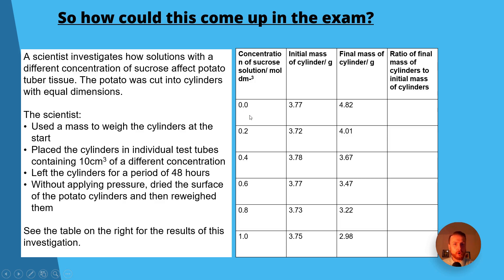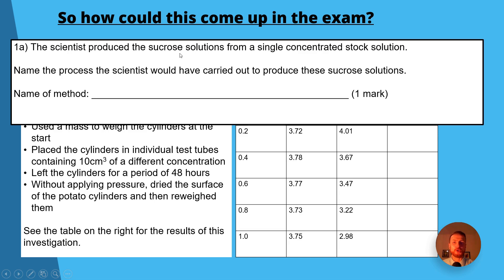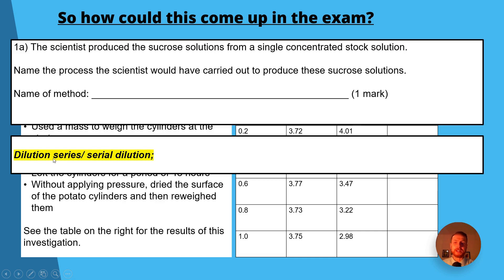Now you can see we've got our sucrose concentrations here and the unit is moles per decimeter cubed, and it goes up in increments of 0.2. We've got the initial mass here, so 3.77 there, it increased. So have a think about whether that would be hypertonic or hypotonic, and the answer would of course be the solution would be hypotonic because the potatoes gain mass. So question 1a: the scientist produced the sucrose solutions from a single concentrated stock solution. Name the process the scientist would have carried out to produce these sucrose solutions. You might want to pause the video here, maybe jot down an answer or have a think about an answer. Let's see if you got it right. The answer is a dilution series or serial dilution, just like we looked at at the start of the video.